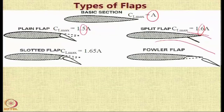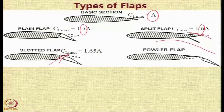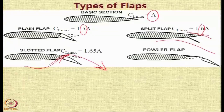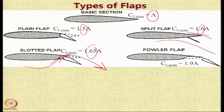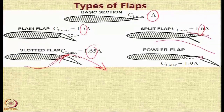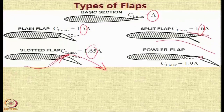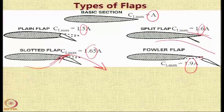If you have a slot in the flap, you are allowing the air to flow over it, so you can get maybe 65% higher value of CL. If you use a Fowler flap, in which not only does the flap deflect down with a gap but also moves backward resulting in an effective increase in surface area, then you can almost double the CL lift coefficient — up to the order of 1.9.